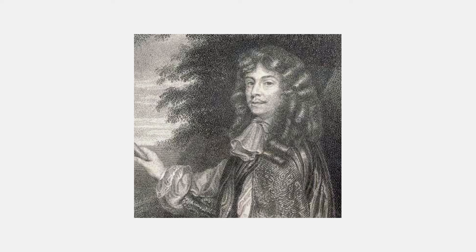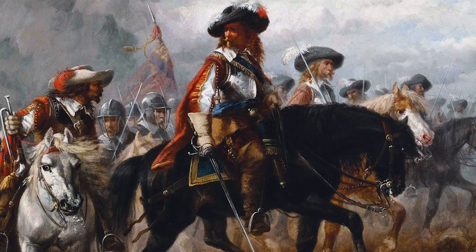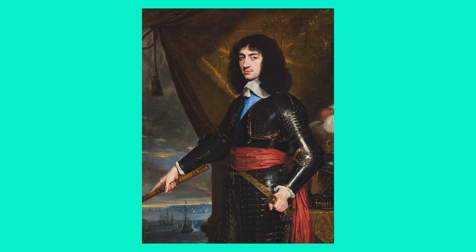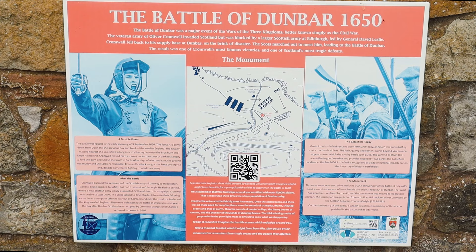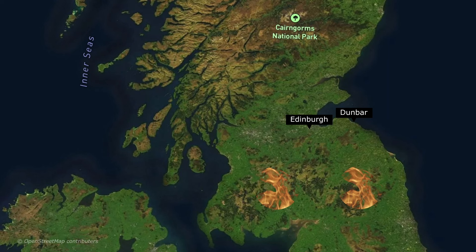After Charles I was executed in early 1649, there was a constitutional crisis. While England became a republic, the rest of the domains of Charles I recognised his son, Charles II, as the rightful king, including many in Scotland. The Scots mobilised an army to press the claim of Charles II, but in June 1650, Cromwell decided on a pre-emptive strike and led an army of the English Republic toward Edinburgh. Leslie called all Scottish men of military age to Edinburgh and employed a scorched earth policy in the lowlands to impede the advance of Cromwell's army.